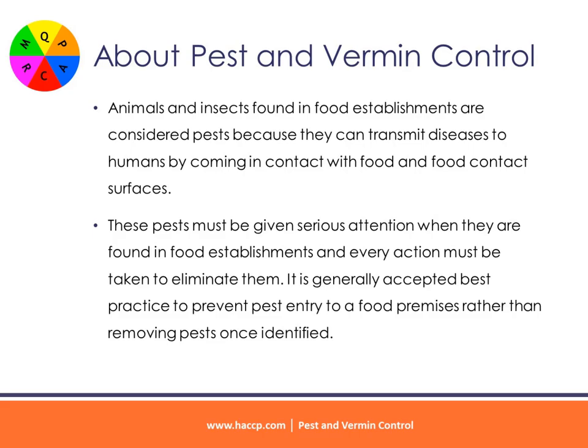About Pest and Vermin Control. Animals and insects found in food establishments are considered pests because they can transmit diseases to humans by coming in contact with food and food contact surfaces. These pests must be given serious attention when found in food establishments, and every action must be taken to eliminate them. It is generally accepted best practice to prevent pest entry to a food premises rather than removing pests once identified.